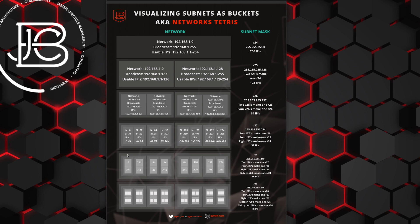I put together this diagram I call 'visualizing subnets as buckets' as a way of describing how visualizing them as pieces that fit together like a puzzle or like Tetris really helped me understand how subnetting works. It shows how different subnets fall within groups of larger subnets, and how smaller subnets can make up larger ones. The key thing that clicked for me was understanding that each type of subnet is made up of smaller subnets that fit together like a puzzle and must align on proper subnet boundaries.